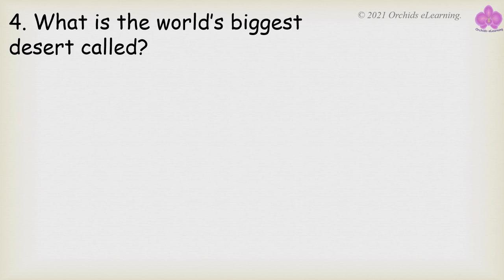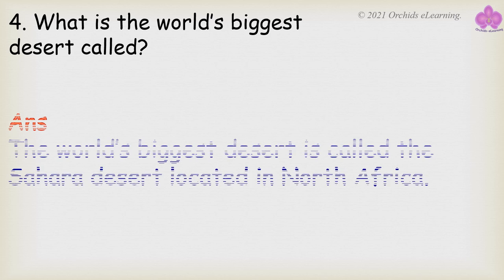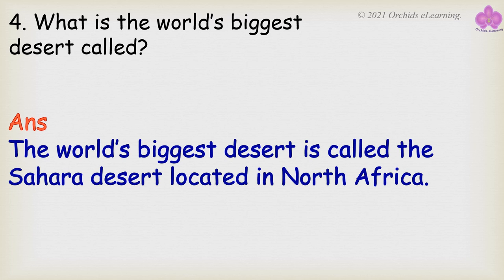What is the world's biggest desert called? The world's biggest desert is called the Sahara Desert, located in North Africa.